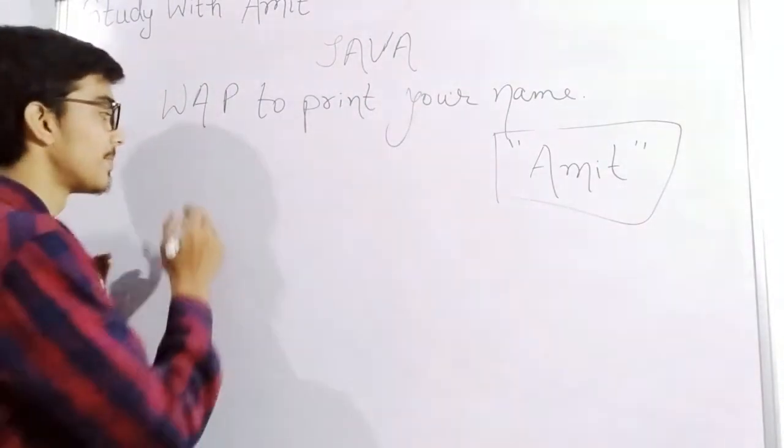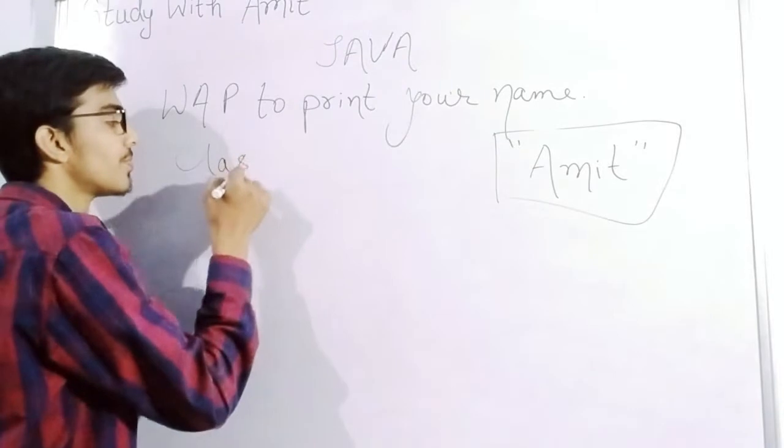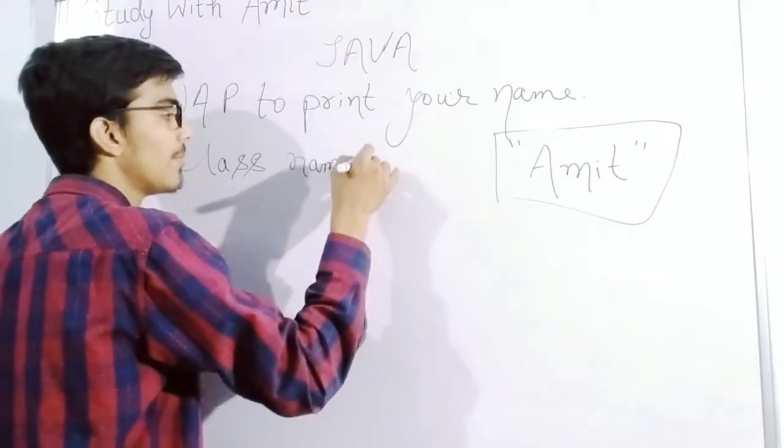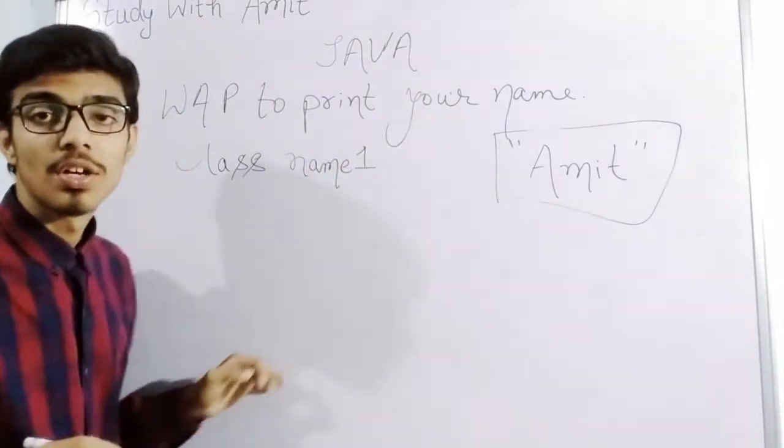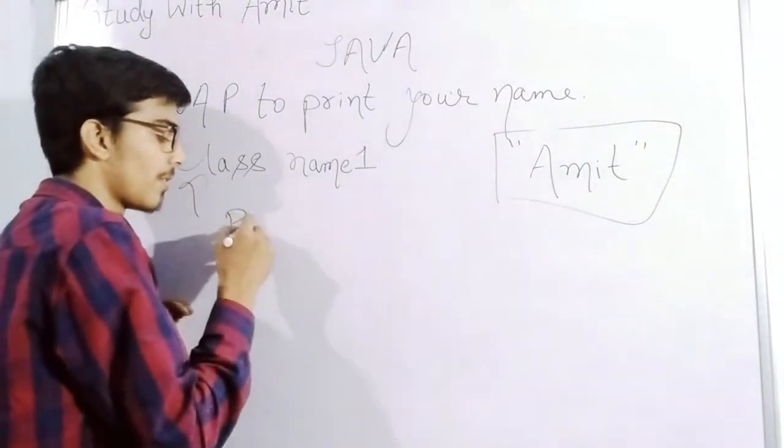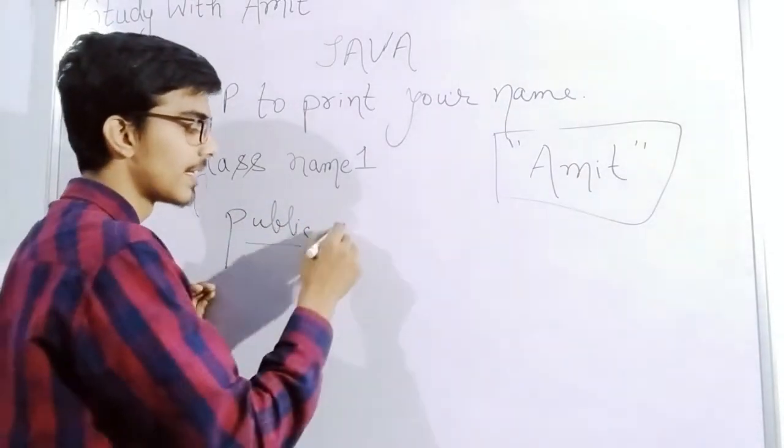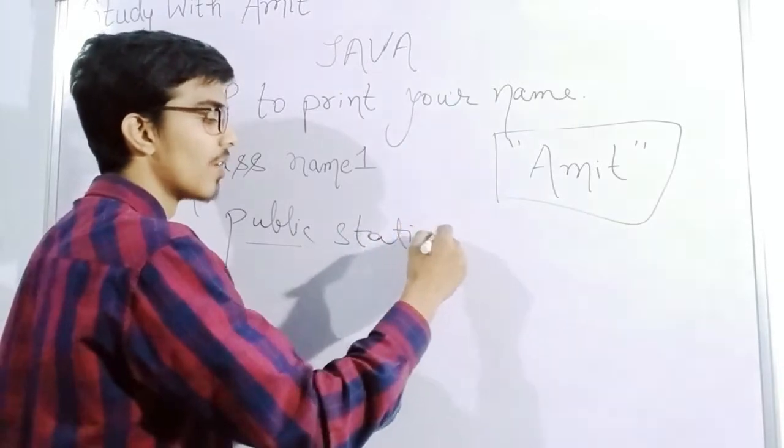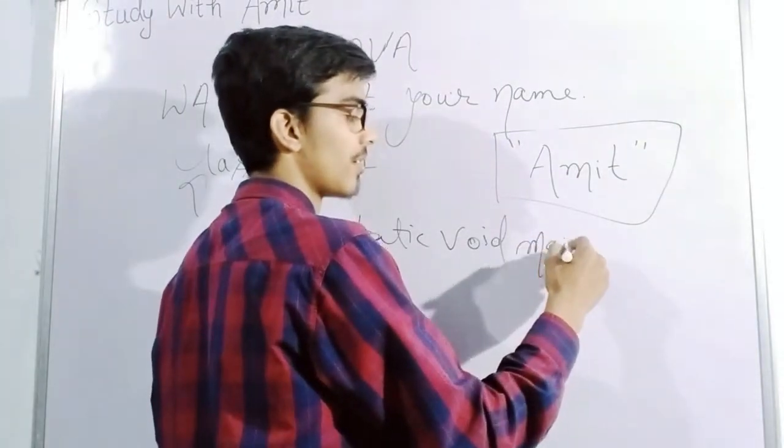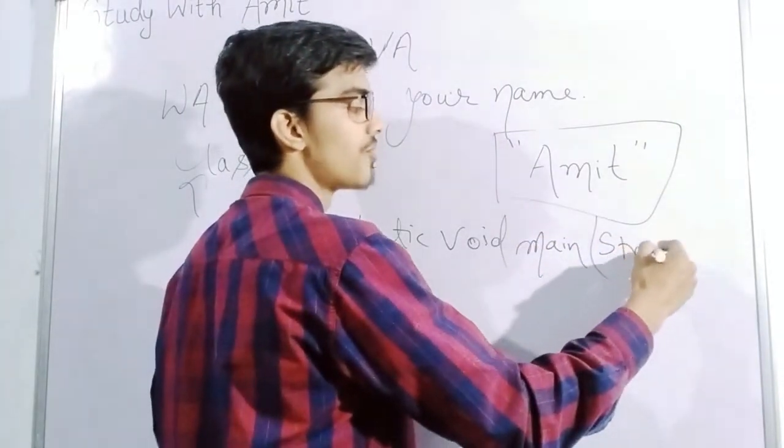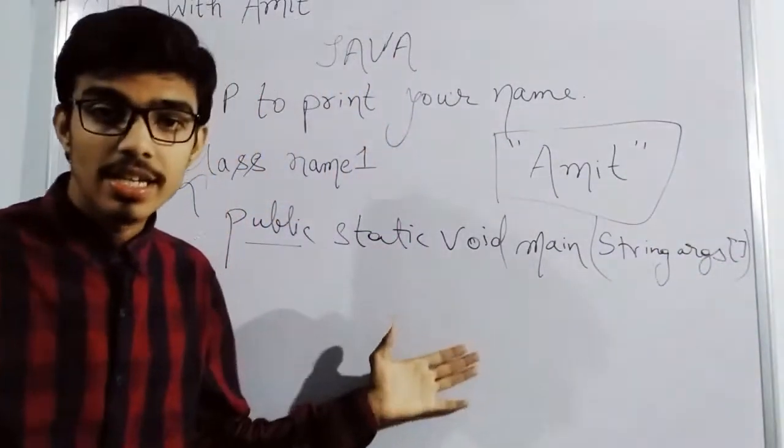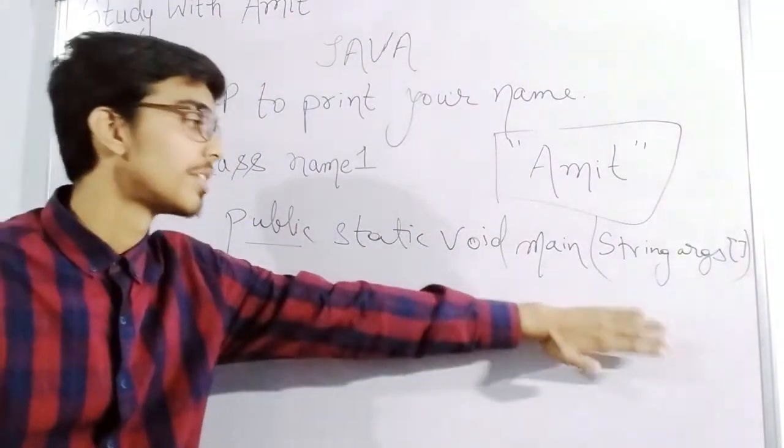First, we'll write class name1. After this, public static void, which will not give any return, and main String args. Public static void main String args - String args is an argument.